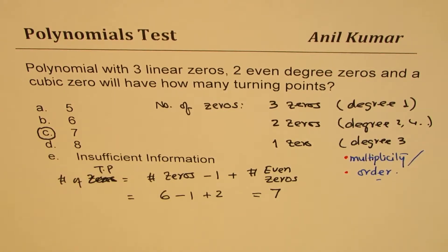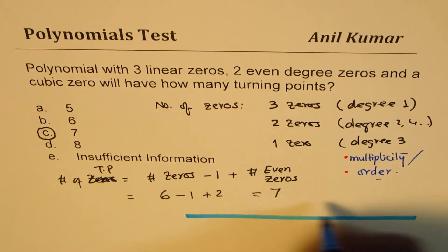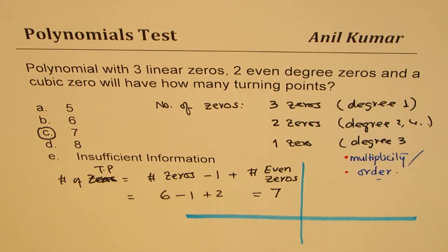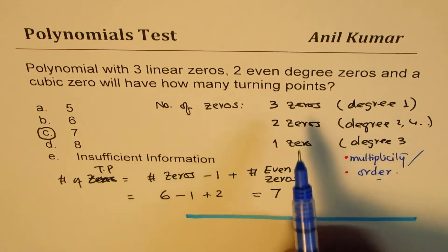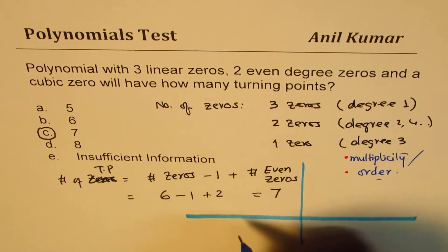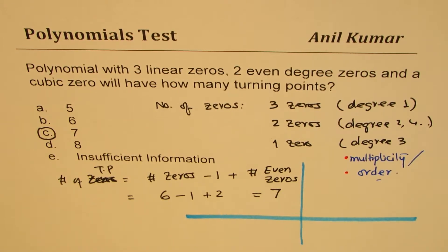You could do like this or you could even sketch the scenario. So let me sketch the scenario for you. When we are saying that we have got three degree one zeros, so let's say degree one zero means what?